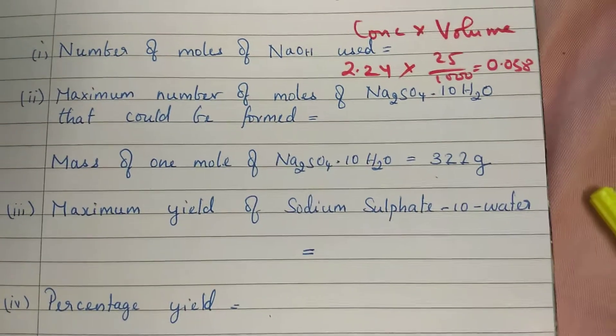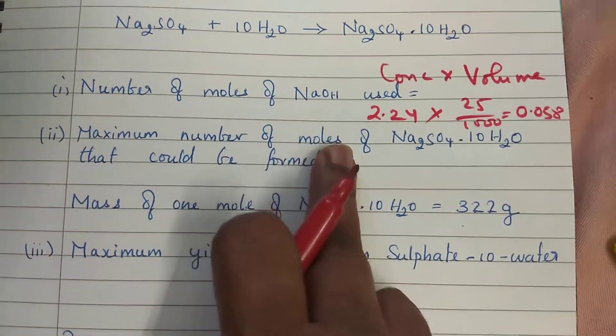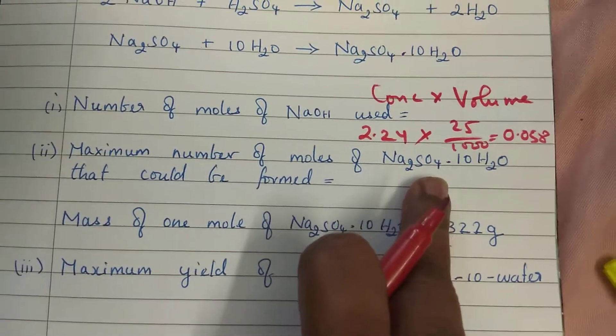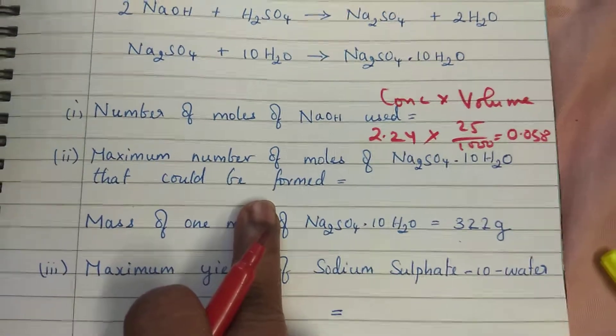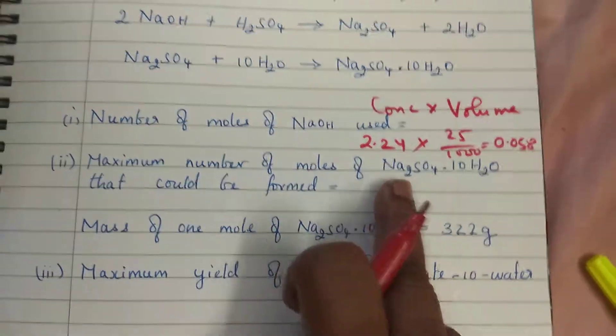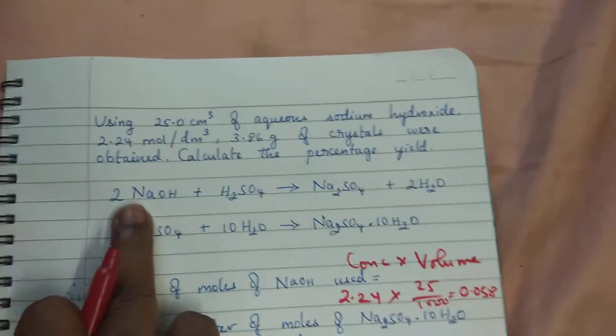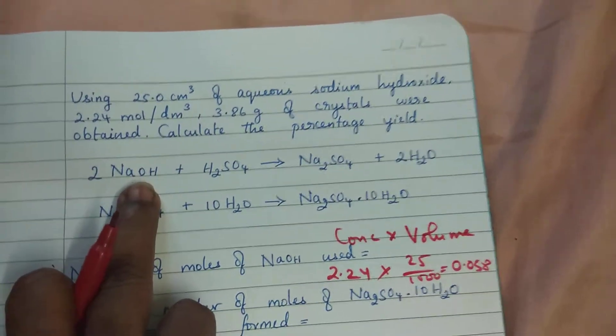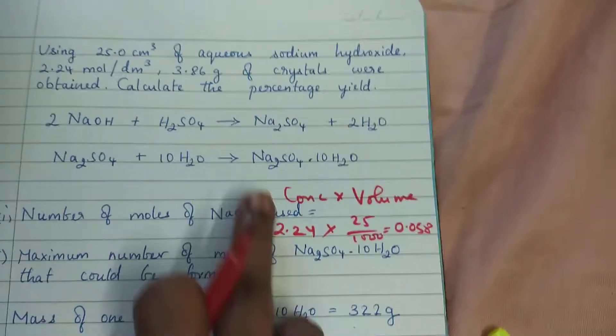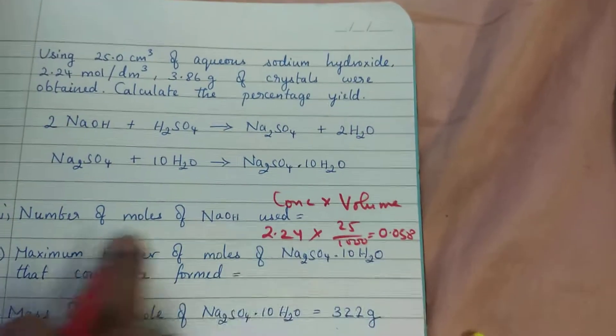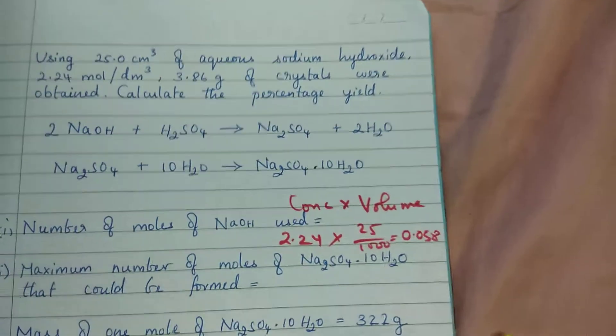The second question is maximum number of moles of sodium sulfate, hydrated sodium sulfate, that could be formed. By seeing the equation, 2 moles of NaOH you need to bring 1 mole of sodium sulfate. That means if the number of moles is 0.058, then 2 is to 1.